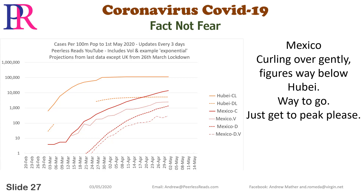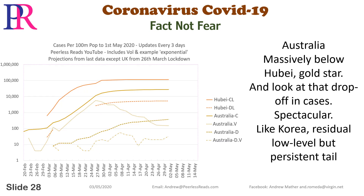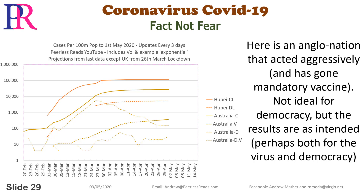Mexico: curling over gently, figures way below Hubei — just get to peak, please. Australia: massively below Hubei — gold star — and look at that drop-off in cases. Spectacular. Like Korea, residual low level but persistent tail. Here is an Anglo nation that acted aggressively and has gone mandatory vaccine — not ideal for democracy, but the results are as intended, perhaps both for the virus and democracy.